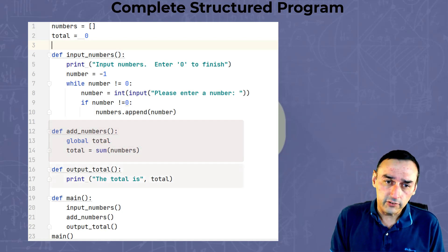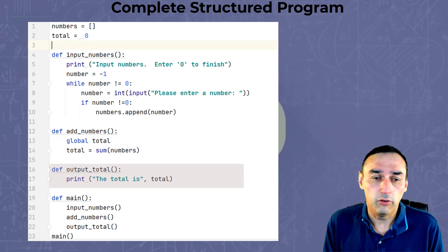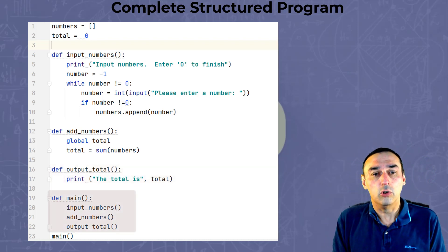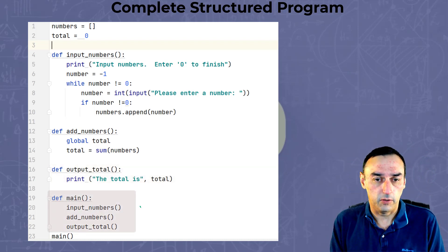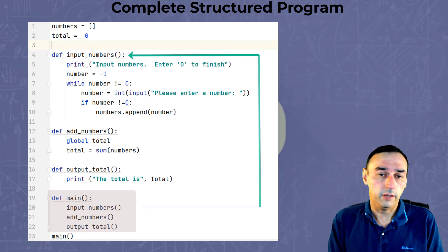The next function simply outputs the total, whatever the contents of the variable total is. And obviously the last function, the main function, is we'll call each of the other functions. So input_numbers, we'll call input_numbers, followed by add_numbers.